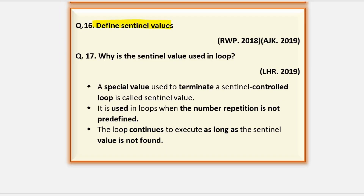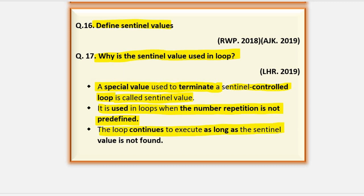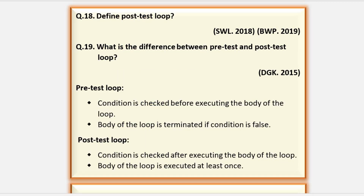Define sentinel values. A similar question is: why is the sentinel value used in a loop? A specific value used to terminate a sentinel-controlled loop is called a sentinel value. Sentinel-controlled loops are while loops and do-while loops. It is used in loops when the number of repetitions is not predefined, and the loop continues to execute as long as the sentinel value is not found.